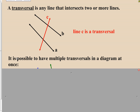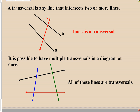One thing that does get a little confusing as we work on transversals is that it is actually possible to have multiple transversals in a diagram at one time, which can cause the diagram to become a little cluttered looking. The only thing you need to keep in mind is that we're only going to be focused on one transversal at a time. So if something is going on around the black transversal intersecting the green and blue lines, we will block out everything else except for the black transversal and where it hits those lines.